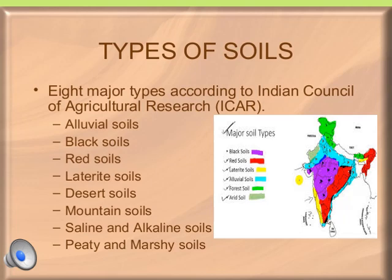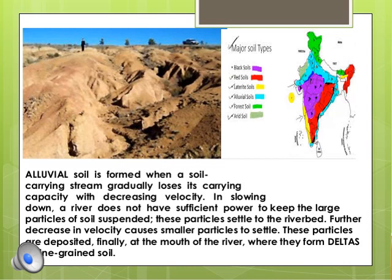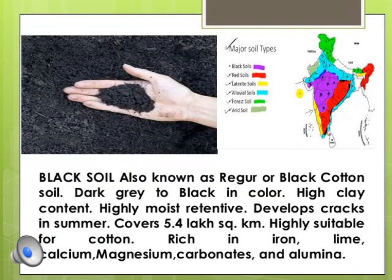Alluvial soil is the most widespread. It is found in the plains of North India and in the flat plains and deltas of the major rivers. This soil is formed due to the deposition of sediments by rivers. Alluvial soil is very fertile and supports agriculture. If you look at the map, you can see where alluvial soil is found.